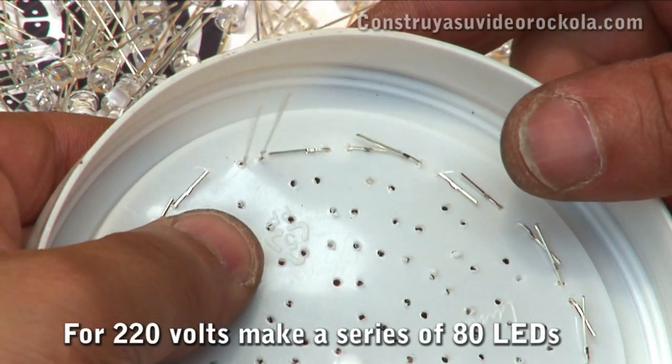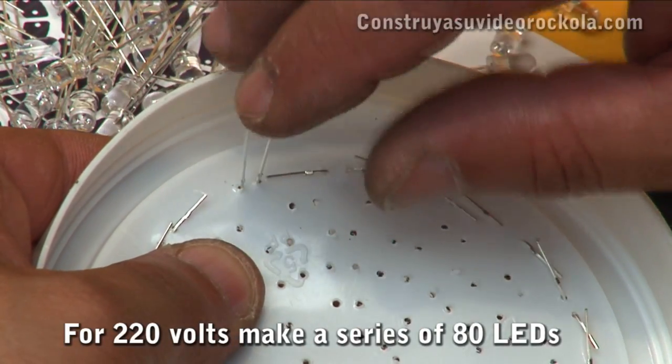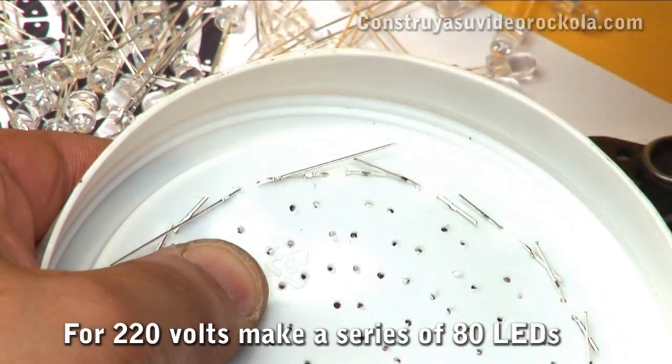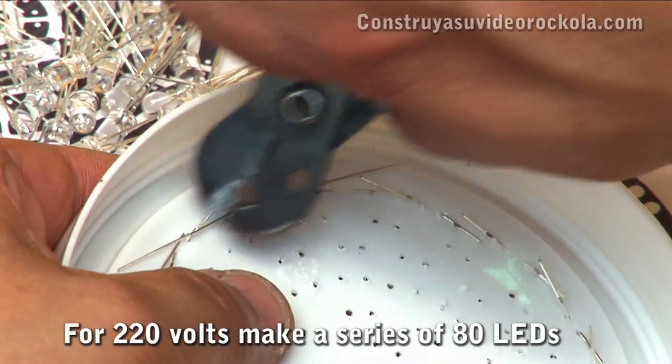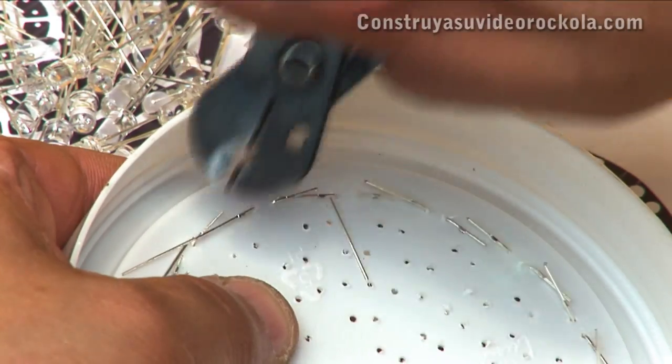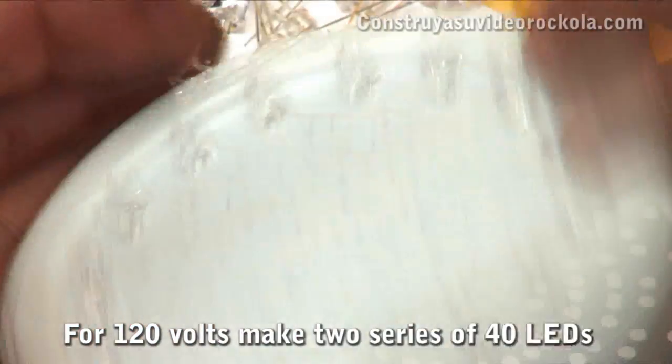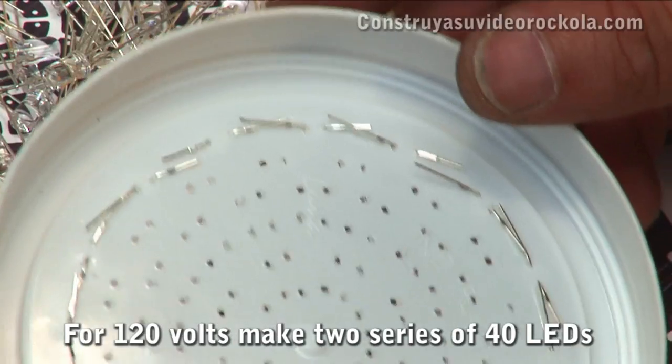If in our country we have a voltage of 220 on the public network, we must make a single series from start to finish with the 80 LEDs. But if we have a voltage of 120 volts, we should make two sets of 40 LEDs in parallel.